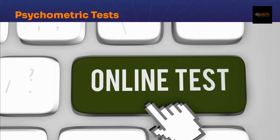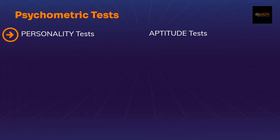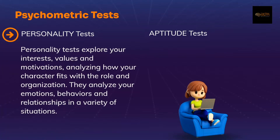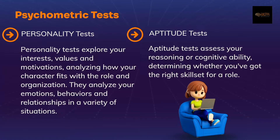There are two main types of psychometric tests: personality tests and aptitude tests. Personality tests explore your interests, values and motivations, analyzing how your character fits with the role and the organization. They analyze your emotions, behaviors and relationships in a variety of situations. Aptitude tests, on the other hand, assess your reasoning or cognitive ability, determining whether you've got the right skill set for a role.